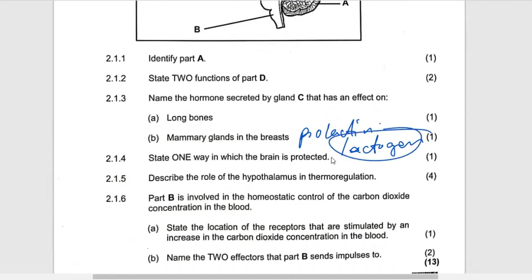Lactin means milk — so lactose is milk sugar. Anything related to 'lact' means that it is milk. You must think about milk. So the answer is prolactin.